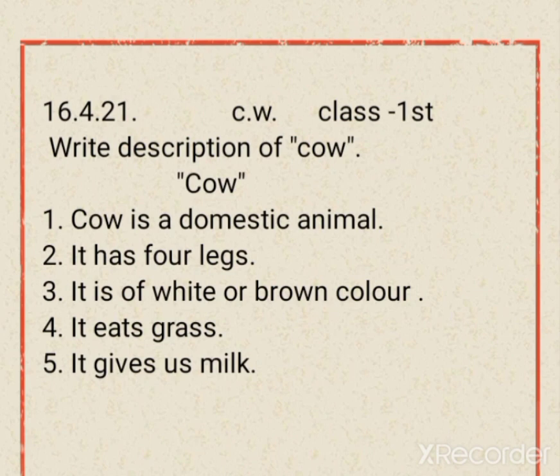Domestic means that we can keep them, they can give us something, or they can help us. Those animals are called domestic animals. In a previous class we learned about domestic animals. Second sentence: it has four legs. Third: it is of white or brown color. Number four: it eats grass.